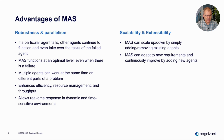Another advantage is robustness and parallelism. If a particular agent fails, other agents in the multi-agent system continue to function and may even take over the task of the failed agent. So multi-agent systems function at an optimal level even when there is a failure. This also enhances resource management, efficiency, and throughput of the overall system. Scalability and extensibility is another advantage — you can simply scale up or down by adding or removing agents, and adapt to new requirements by adding new specialized agents.